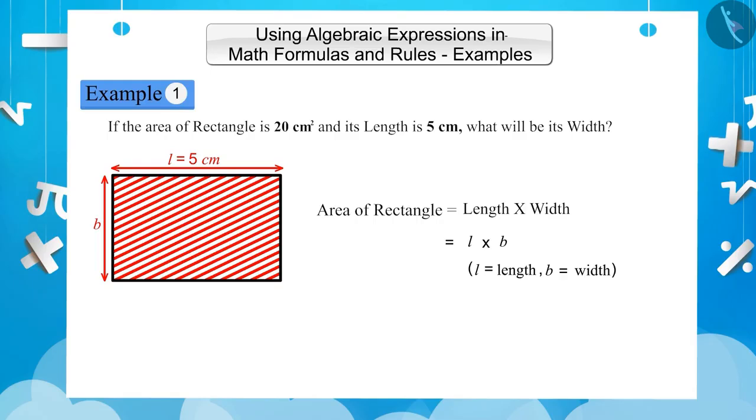As we have just seen, the area of the rectangle is L multiplied by B. That is, 20 equals 5 times B. Now we will get 20 equals 5B.